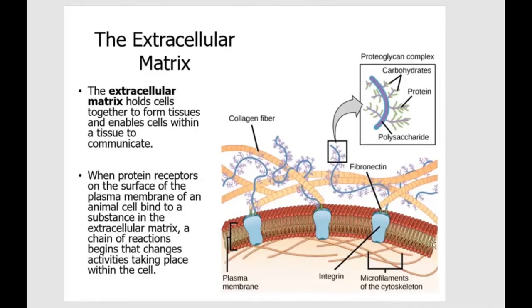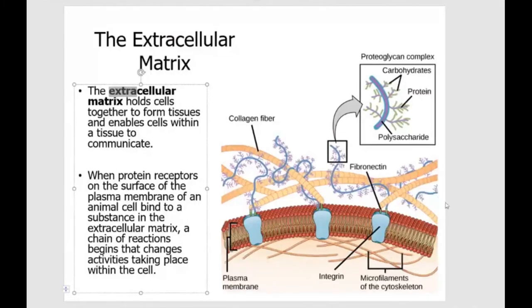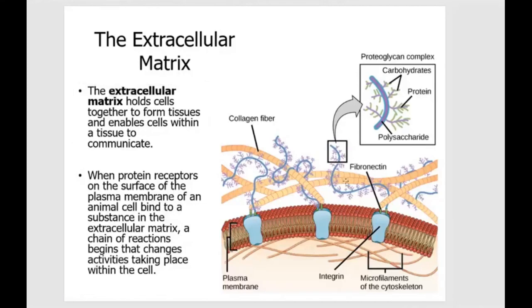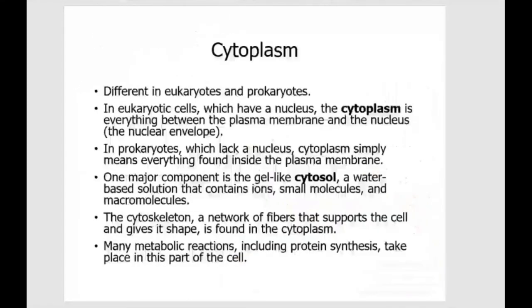The extracellular matrix refers to everything outside the cell. It's kind of sticky, gel-like, and not watery. The extracellular matrix can hold cells together to form tissues and also allows cells to communicate with one another. We'll mention this a little bit more when we talk about cell communication.